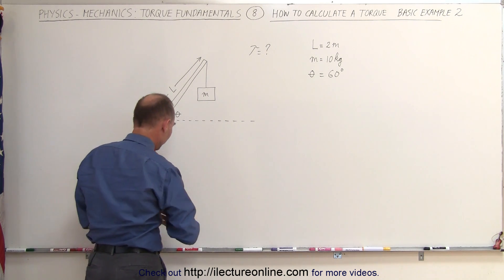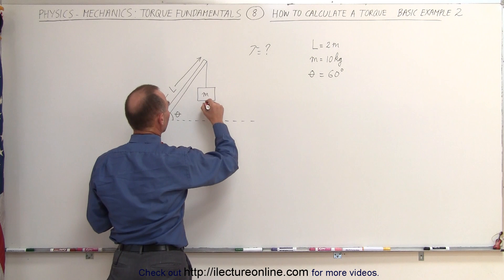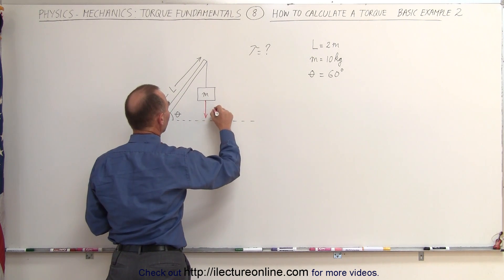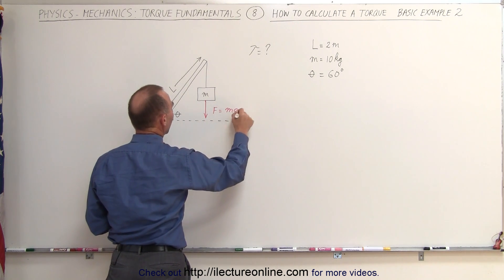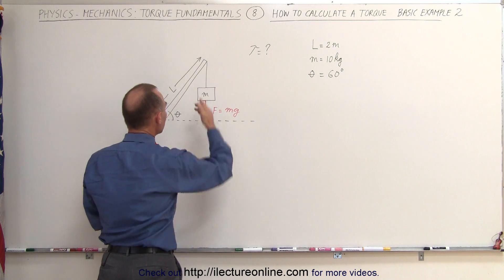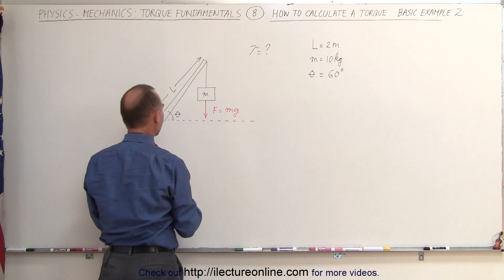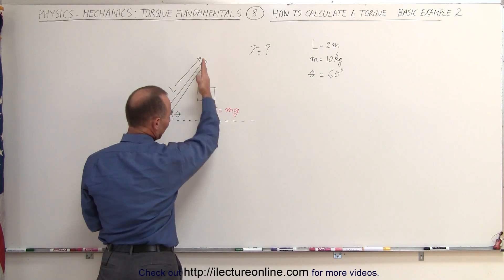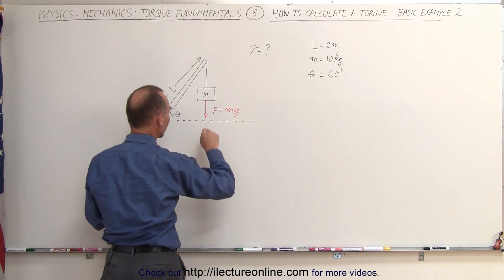Since we can see that the force is acting in this direction, there's the force, and we know that the force is equal to the weight of the object, m times g. You can see a nice triangle right here. We can also see that this is the line of action of the force, if we continue this with a dashed line.